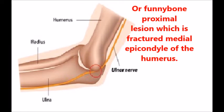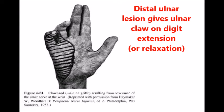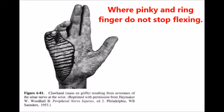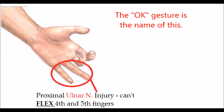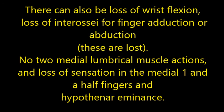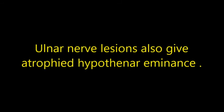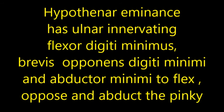In distal ulnar nerve lesions, the pinky and ring finger do not stop flexing. In proximal ulnar nerve lesions, there's radial deviation of the wrist with the pinky and ring finger staying up when making a fist — this is the 'OK' gesture sign. There can also be loss of wrist flexion, loss of interossei forefinger adduction and abduction, loss of medial lumbrical muscle actions, and loss of sensation in the medial one and a half fingers and hypothenar eminence. Ulnar nerve lesions also give atrophied hypothenar eminence. The hypothenar eminence contains ulnar-innervated muscles: Flexor digiti minimi brevis, Opponens digiti minimi, and Abductor digiti minimi — to flex, oppose, and abduct.